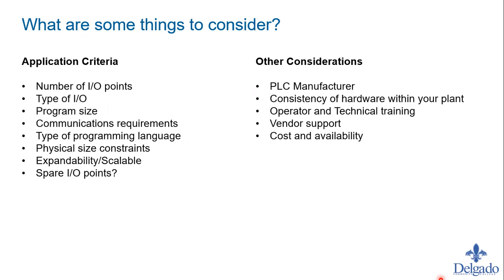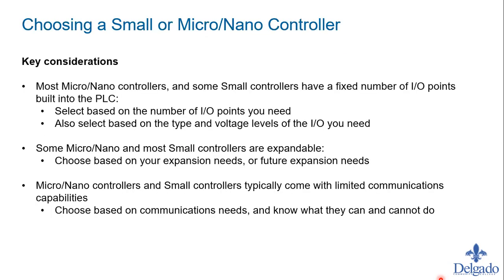Cost and availability are also important. For small or micro/nano type controllers, most have a fixed number of I/O points built into the PLC. Knowing upfront what you need is critical, because once you purchase that PLC and discover later you needed a few extra I/O points, it's fixed — you have to put it on the shelf and buy another one. So we want to buy it right the first time.